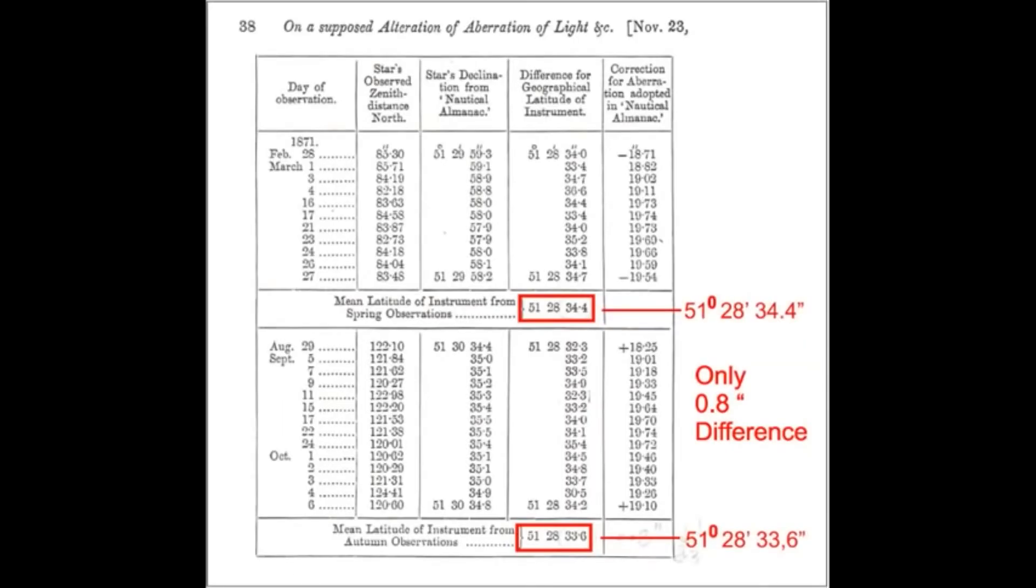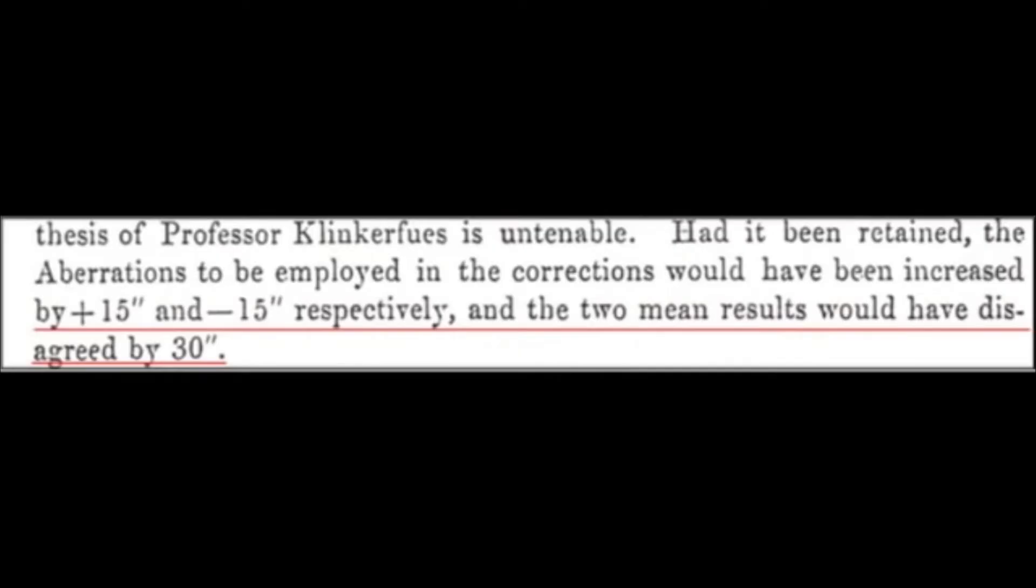This is a copy from his original report. You can see that the two readings are virtually identical. If it had been the telescope that was moving, Airy expected a figure of 30 seconds of arc. In fact, he only managed to read 0.8 seconds of arc difference.